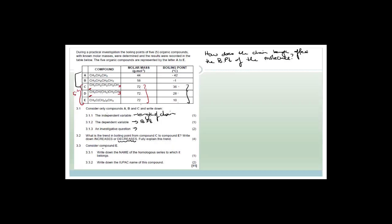Compound E belongs to the alkane homologous series. For the IUPAC name: the main chain is three carbons long, so it's propane, with a methyl group and another methyl group both on carbon 2 — giving 2,2-dimethylpropane.